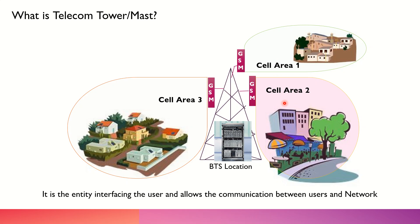Principally, we use three antennas in each site, but it can be increased. Each of the three antennas is directed towards a different geographical area so as to cater to different users lying in that particular area, allowing those users to communicate with the tower or the base station.